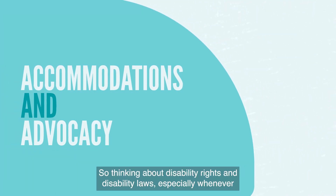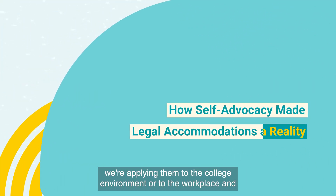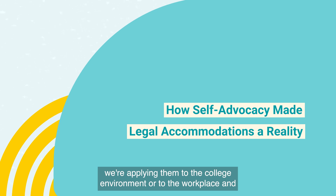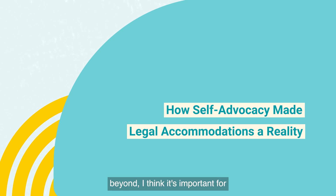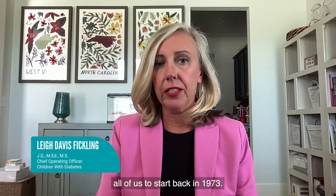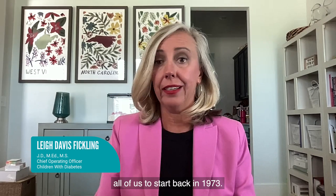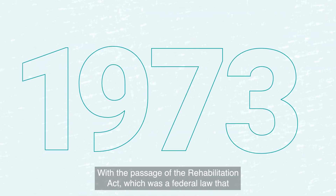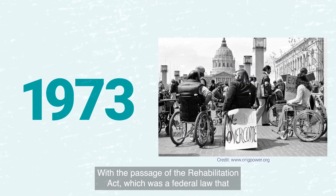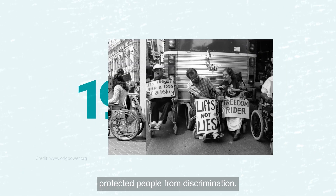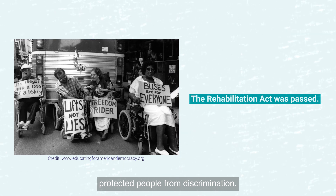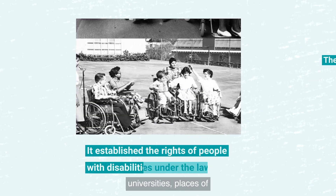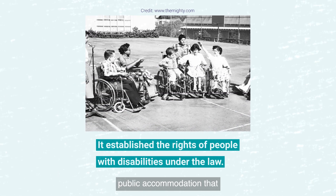Thinking about disability rights and disability laws, especially when applying them to the college environment or to the workplace and beyond, I think it's important for all of us to start back in 1973 with the passage of the Rehabilitation Act, which was a federal law that protected people from discrimination. That applies to colleges, universities, and places of public accommodation that receive federal funding.